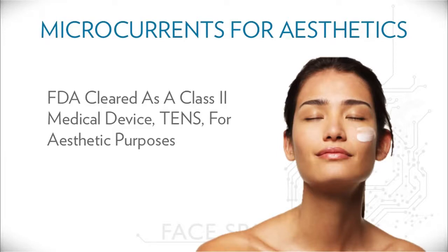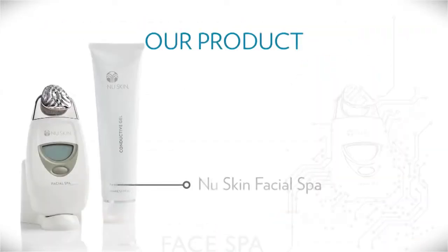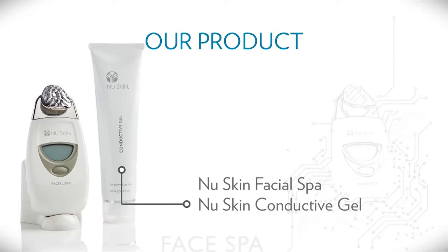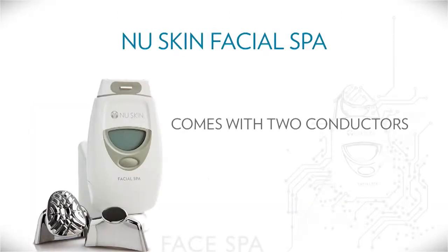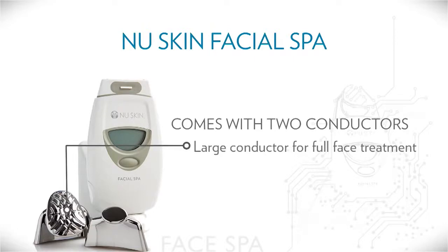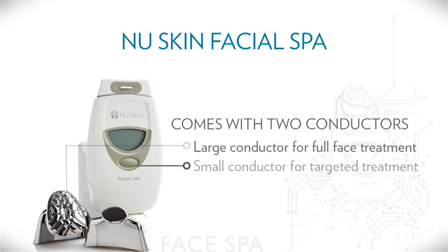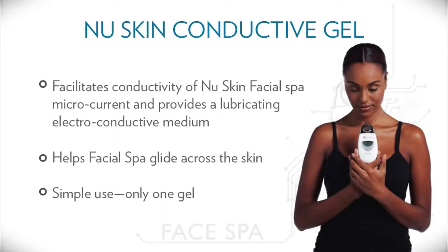This is an FDA-cleared, Class II medical device, a TENS, for aesthetic purposes. Our product consists of two products: the Nu Skin Facial Spa and Nu Skin Conductive Gel. The Nu Skin Facial Spa comes with two conductors — a large conductor for full-face treatment and a small conductor for targeted area treatment. The Nu Skin Conductive Gel facilitates conductivity of Nu Skin Facial Spa microcurrent and provides a lubricating electroconductive medium. This helps the Facial Spa glide across the skin, and it's just one gel.